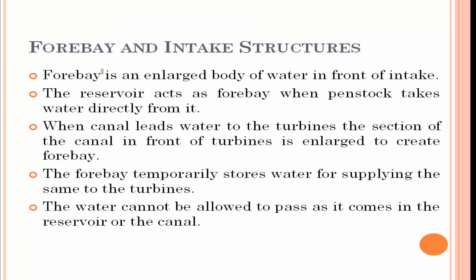First, the forebay. It is an enlarged body of water in front of the intake. A huge mass of water is held in the forebay. The reservoir acts as the forebay when the penstock takes water directly from it. When a canal leads water to the turbines, the section of the canal in front of the turbine is enlarged to create a forebay.